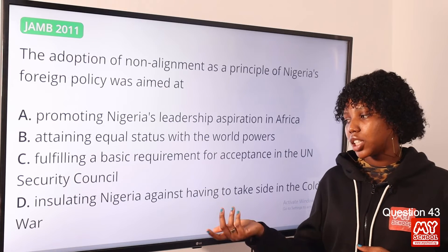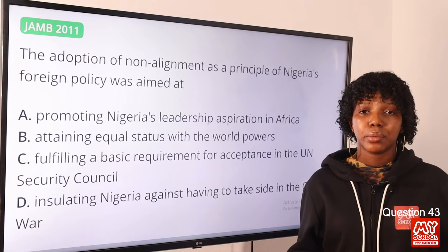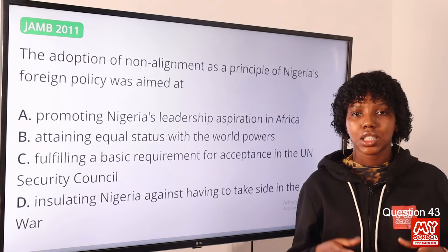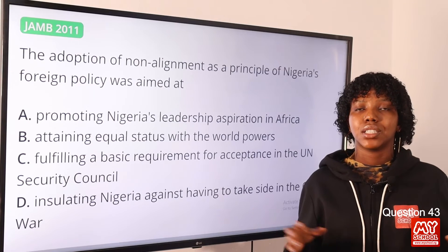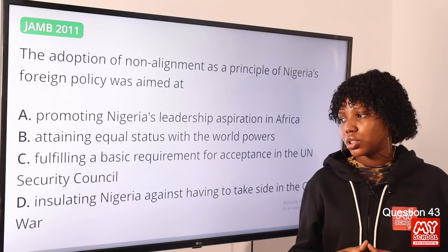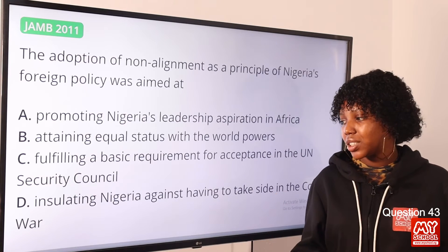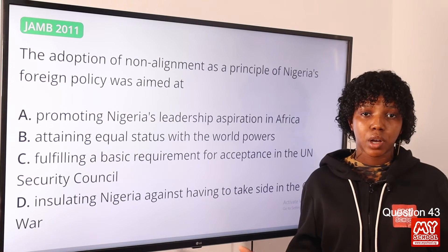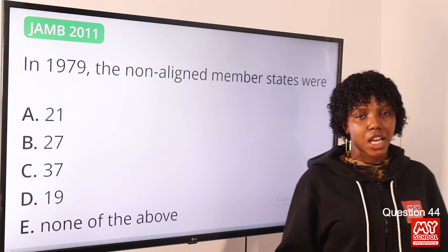Question 43: The adoption of non-alignment as a principle of Nigeria's foreign policy was aimed at — the answer is option D: insulating Nigeria against having to take sides in the Cold War. Non-alignment is the non-commitment of a nation to either the west or the east on any international issues, meaning they remain neutral. The Cold War was between Britain and Russia, the superpowers. The answer is option D.